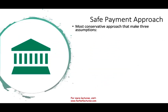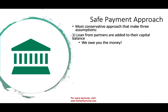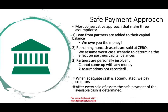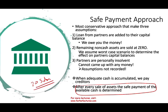In the prior session we looked at the safe payment approach, which is the most conservative approach. I'm going to go over the next few slides quickly as a review, because I'm going to transition to another technique called the advanced plan for distribution of cash. The safe payment approach assumes loans from partners are added to their capital balances, remaining non-cash assets are sold at zero, and partners are personally insolvent. After each sale, you have to prepare a schedule — and if you're making 20 different sales, that's very inefficient.